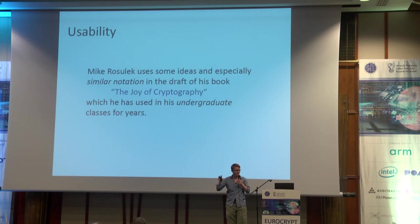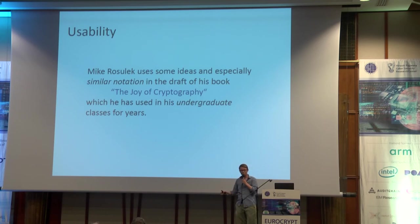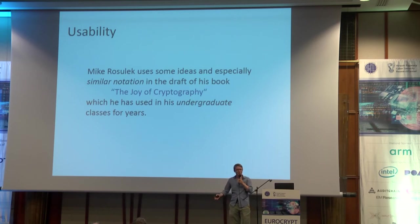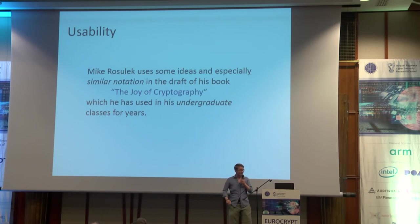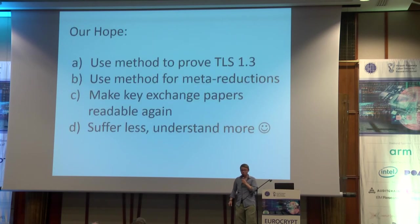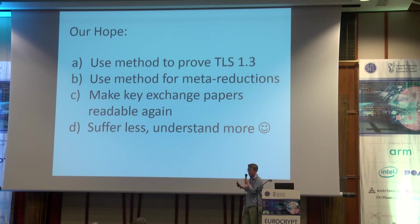Mike Rosenblatt uses some of those ideas, and especially a very similar notation, in the draft of his book The Joy of Cryptography, which is very nice. He has been using this in his undergraduate classes for many years, which makes this type of notation very usable for making complicated proofs as simple as possible. Our hope is that we can use this method to prove TLS 1.3, to use it for meta-reductions, to make key exchange papers readable again, and most of all, to suffer less and to hopefully understand more.